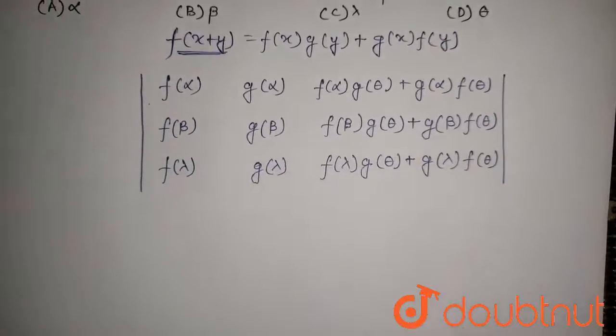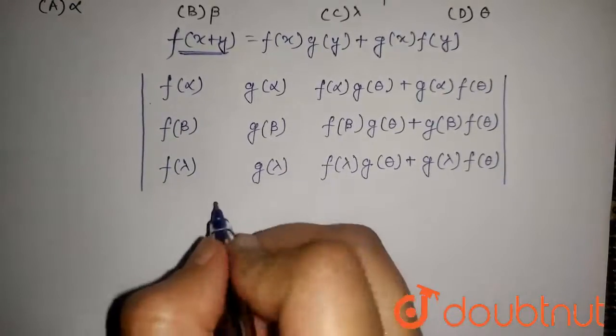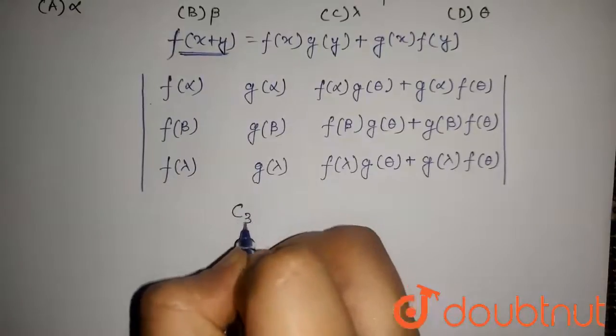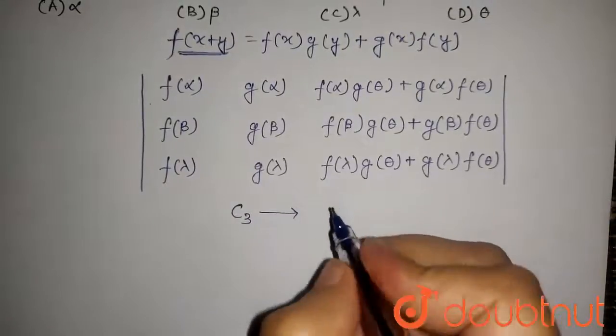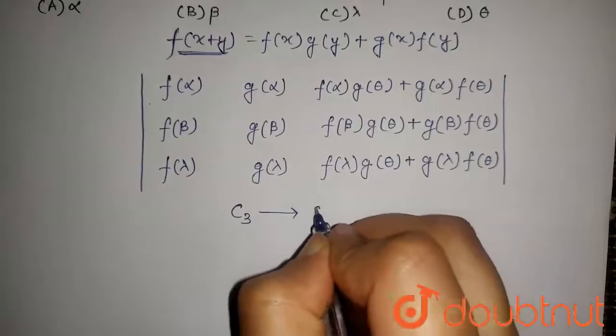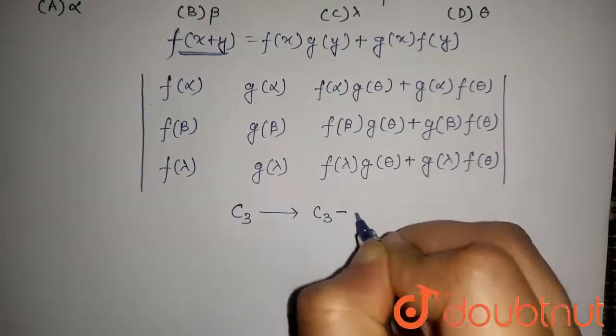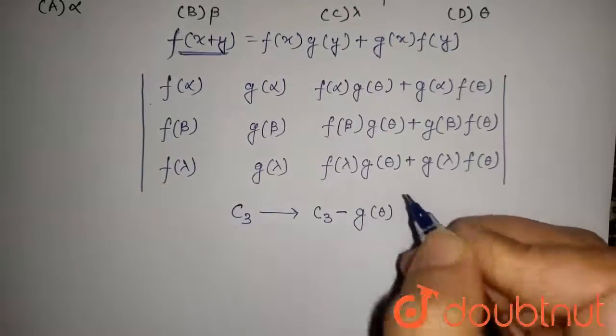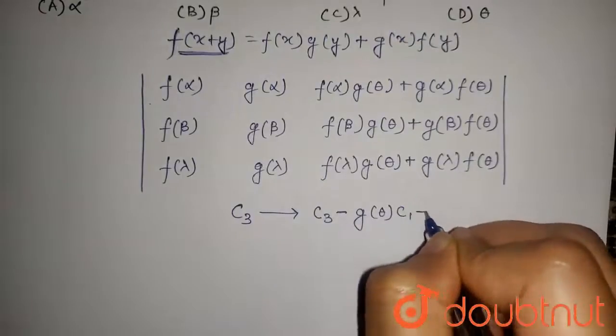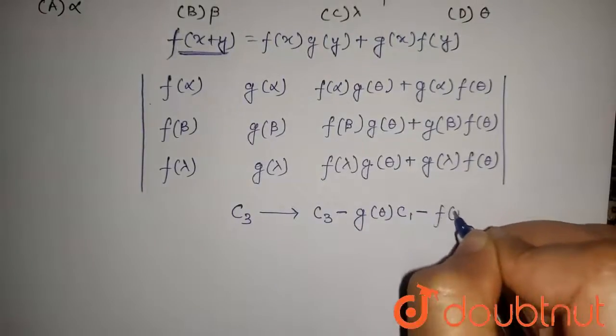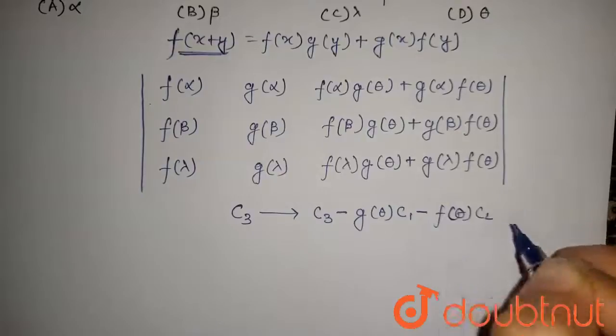Now applying property of determinant, that is c3 to c3 minus g theta into c1 minus f theta c2.